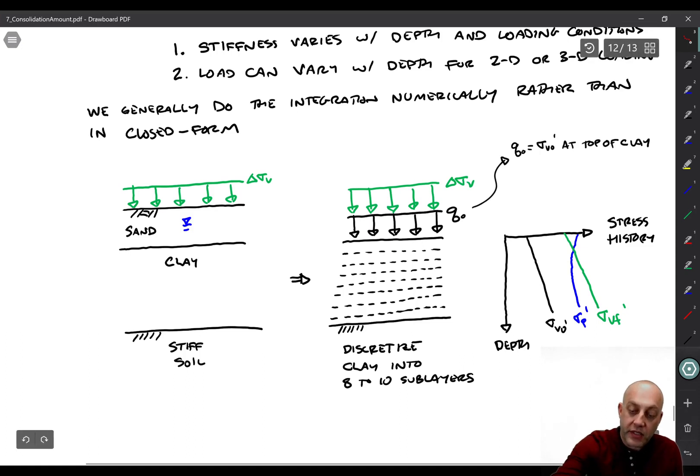So the whole sand layer and water table, everything that's happening above the top of the clay, just gets lumped into this one q0 variable, which makes the problem simpler to solve. Then what we'll do is discretize the clay layer into 8 to 10 sub-layers. You could use more sub-layers if you want. In general, if you increase the number of sub-layers, the numerical integration becomes more accurate. But usually we just do 8 to 10 if we're going to solve it using a program like Excel.